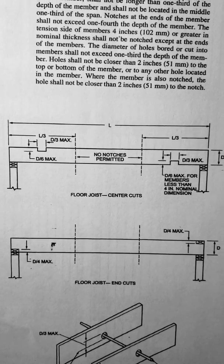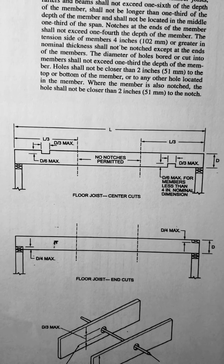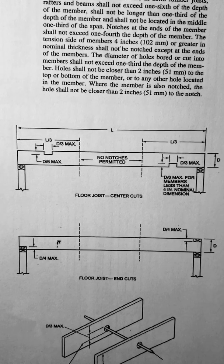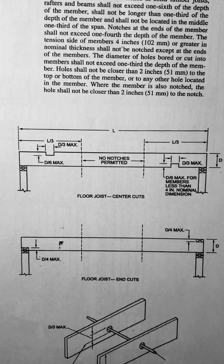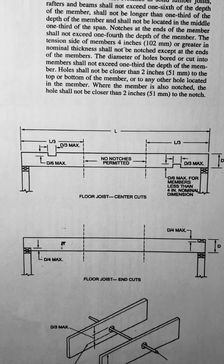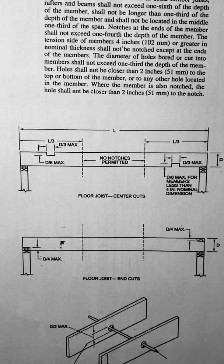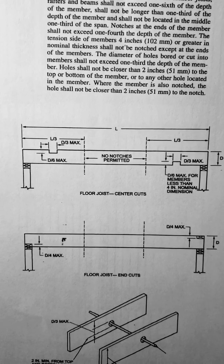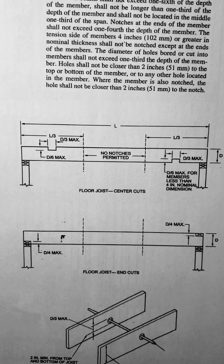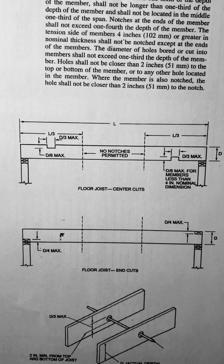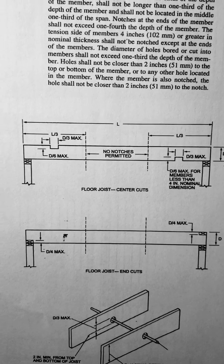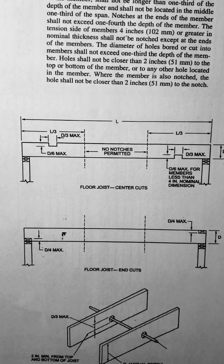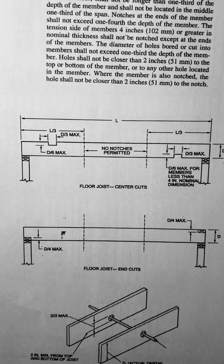Starting with this floor joist center cuts — you'll notice if you take the length, which is the L at the top, and divide it by 3, there are no notches permitted in the center third. On the right side is the depth of the member. Looking on the left side, we see the notch at the top. The diameter divided by 3, or 1 third the diameter, is the maximum length you can have for that notch, and the maximum depth is 1 sixth. On the right hand side, they show a notch on the tension side of the joist. The depth divided by 3 gives the maximum notch length, same as the other side.